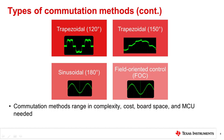Many times, the methods are nicknamed TRAP120, TRAP150, SIN180, and FOC. These methods range in complexity, cost, and board space. An external MCU may or may not be needed to implement commutation in software.